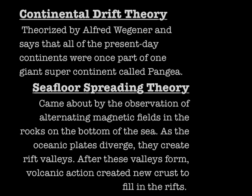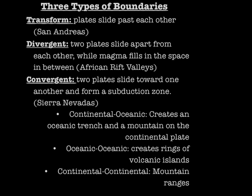There are three types of plate boundaries. Transform boundaries have plates slide past each other. Divergent boundaries have two plates slide apart from each other while magma fills in the space in between. Convergent boundaries have two plates slide toward one another and form a subduction zone, with continental-oceanic, continental-continental, and oceanic-oceanic convergent plate types.